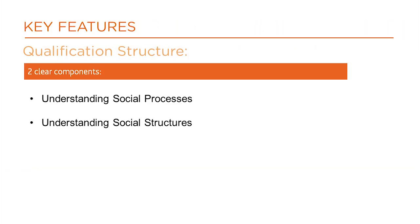There are two clear components. Component one, Understanding Social Processes, is a written examination which accounts for 50% of the whole qualification. The component covers four topic areas which include key concepts and processes of cultural transmission, education, families, and sociological research methods.